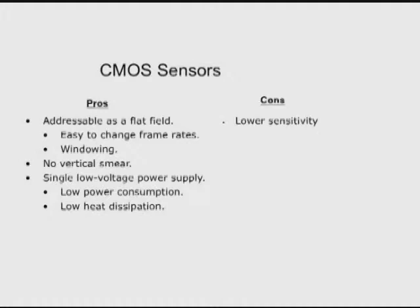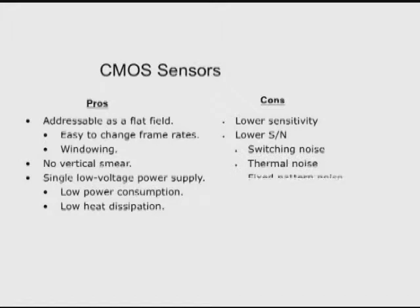It's a low sensitivity device and the signal-to-noise ratio is not as good as on a CCD. Sometimes it has fixed patterns, and the worst of all is the rolling shutter — this is standard even in the new generation of CMOS.